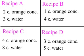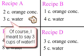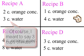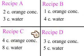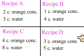In recipe A you have two cups of orange concentrate to one cup of water. In recipe B you have one cup of orange concentrate to four cups of water. Recipe C is four cups of orange concentrate to eight cups of water, and recipe D is three cups of orange concentrate to five cups of water.